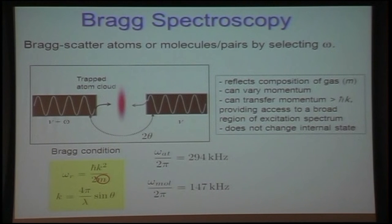So Bragg scattering reflects the composition of the gas, the mass. We can vary the momentum, and we can transfer quite a large momentum, greater than the Fermi momentum. And this provides access to a broad region of the excitation spectrum. This sort you cannot do with radiofrequency spectroscopy, for example, and there is no change in the internal state.